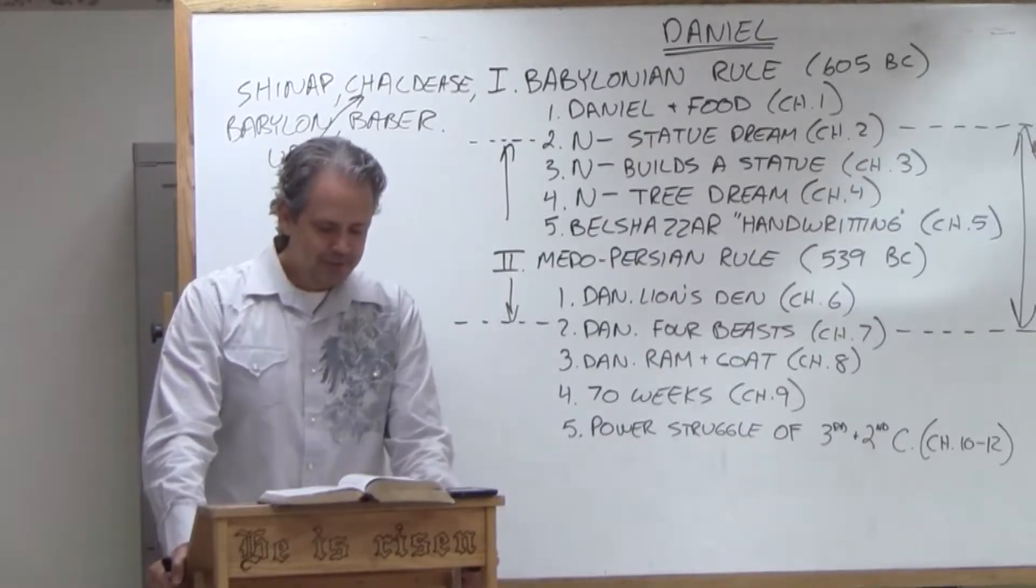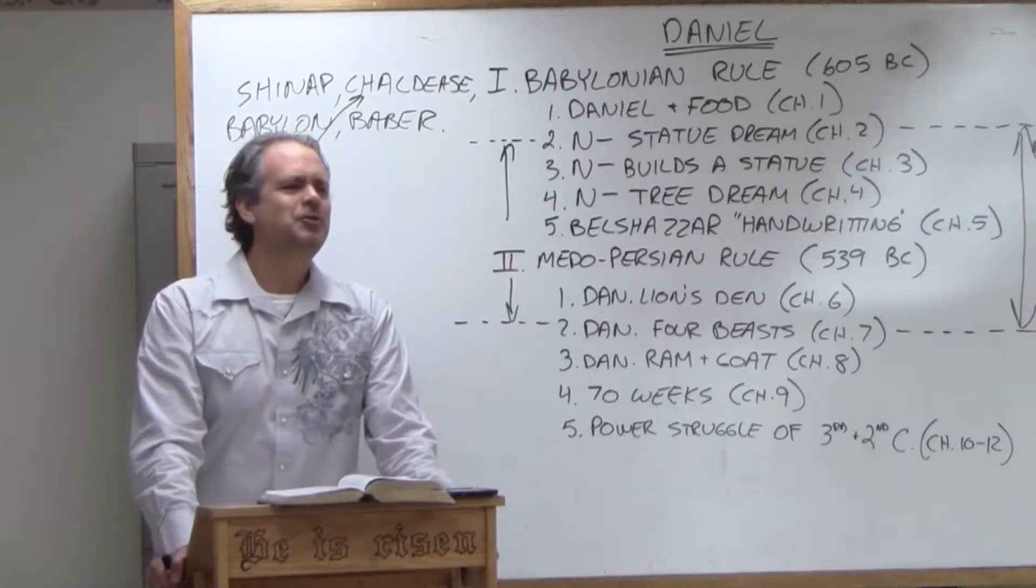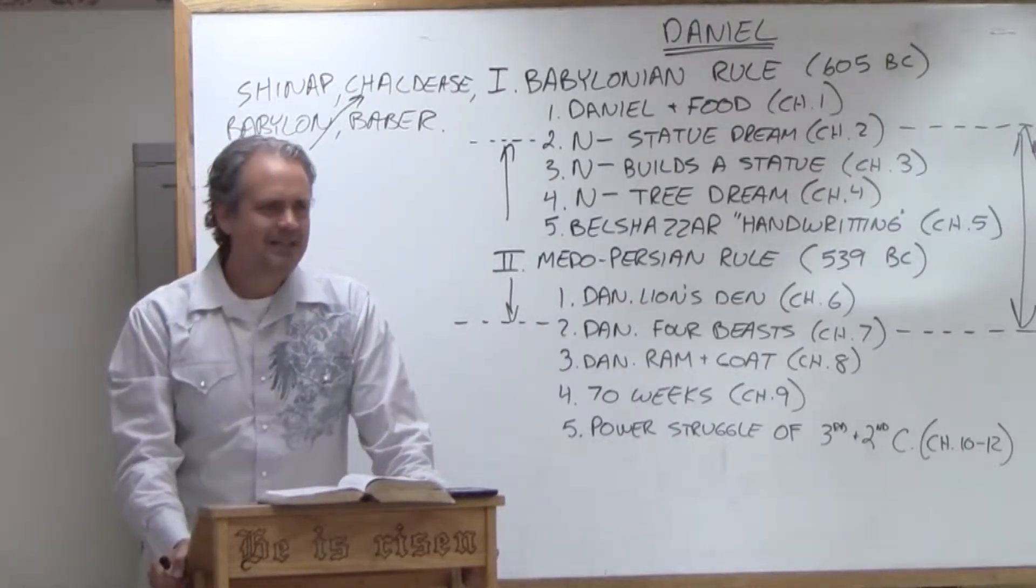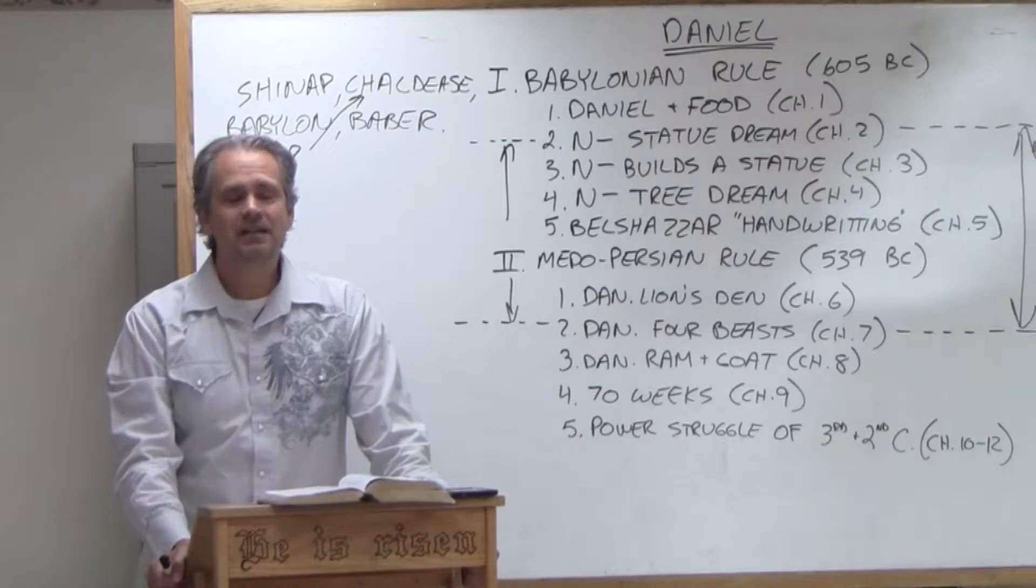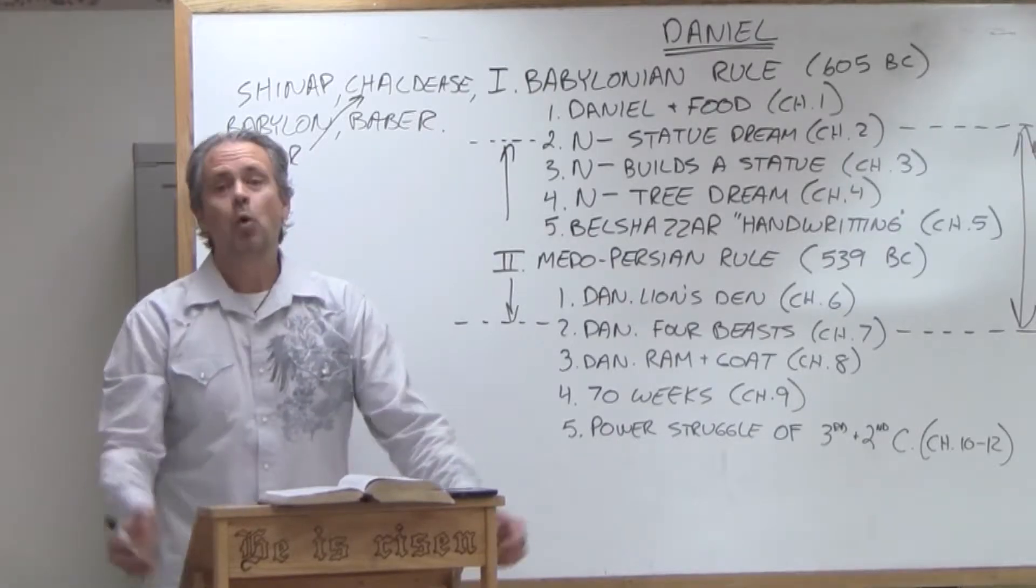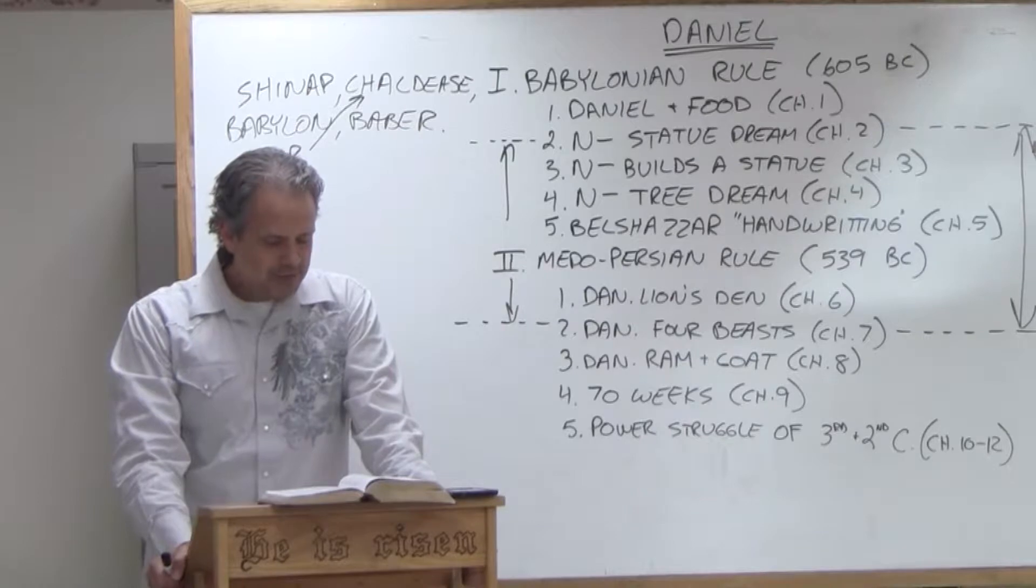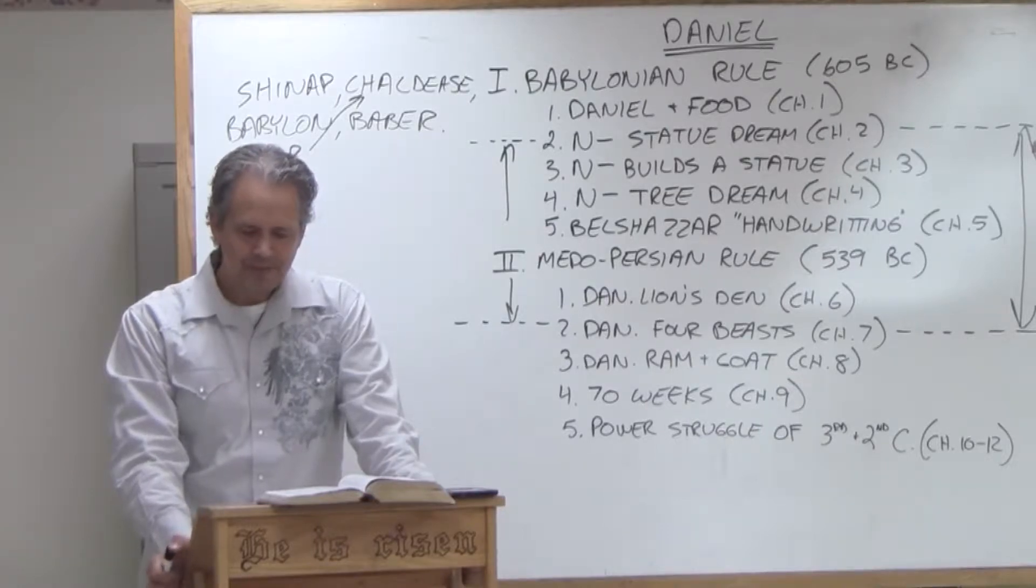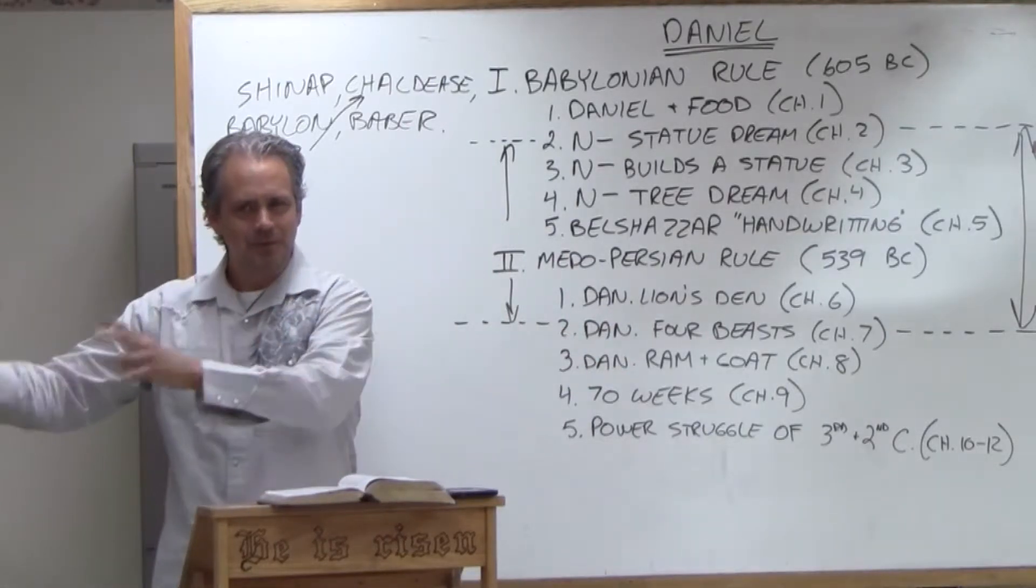In chapter 3, Nebuchadnezzar must have misunderstood his position as this statue because he decides to go make a golden statue that is 60 cubits tall, and a cubit is one and a half feet. So this is 90 feet high, 60 cubits, 90 feet high. This is a nine-story golden image. So he makes this image, and we know the story of Shadrach, Meshach, and Abednego. Everybody has to bend down and worship this image. Kind of reminds us of Revelation. Anybody that does not worship the image will be killed. So we've already seen that happen multiple times throughout history.